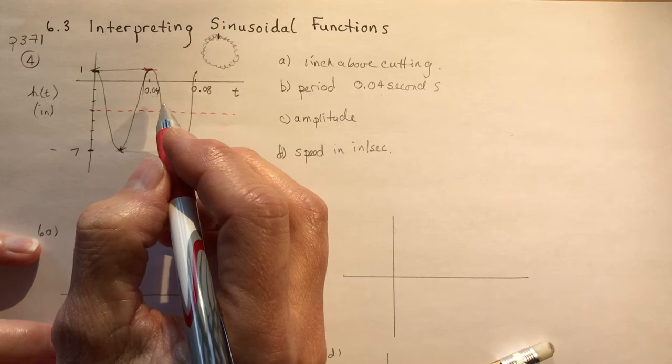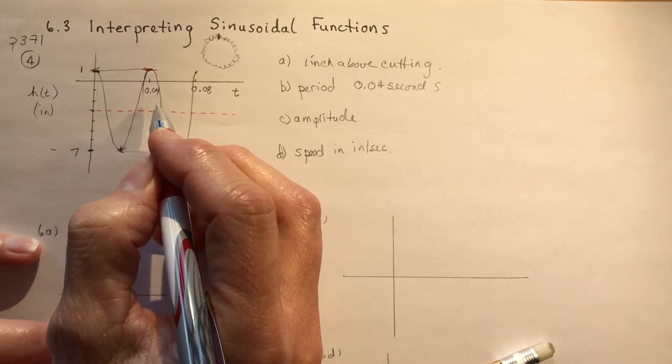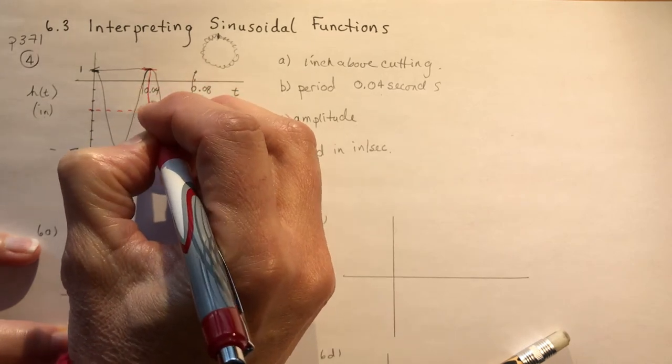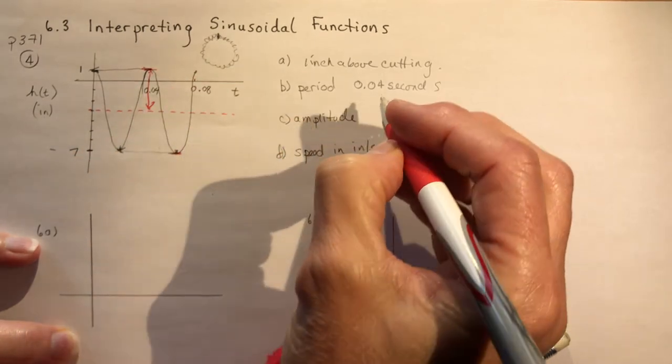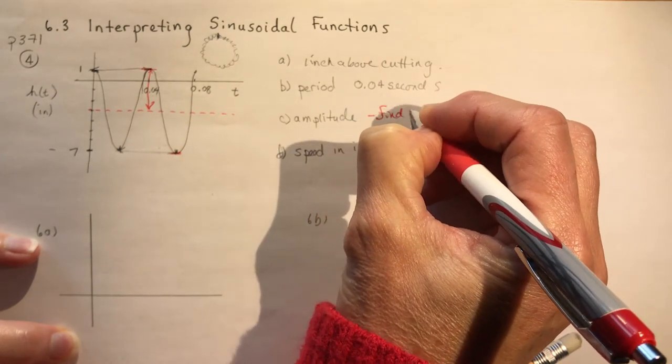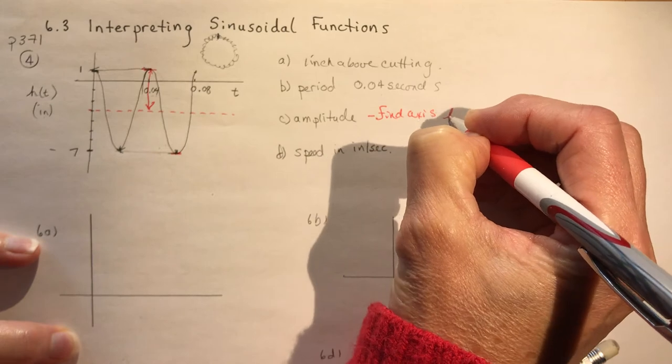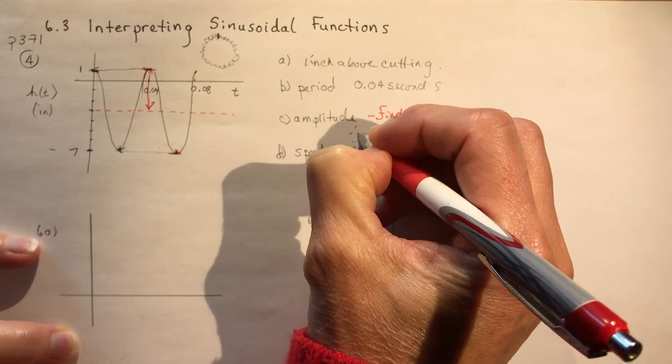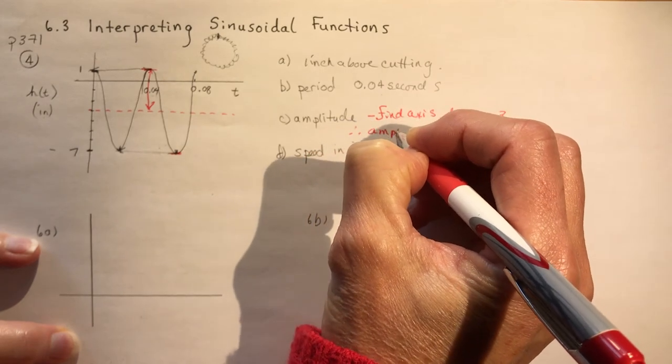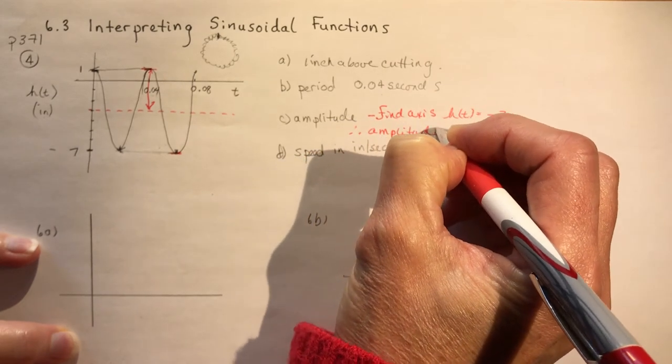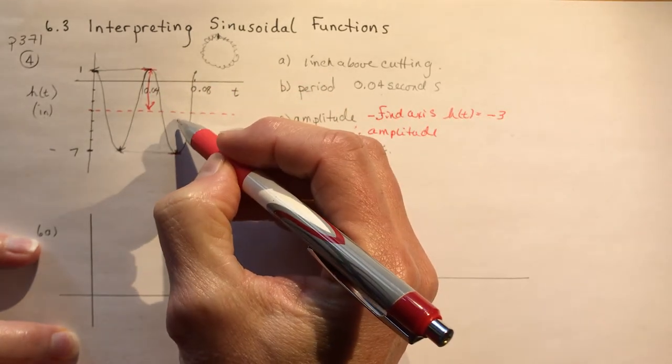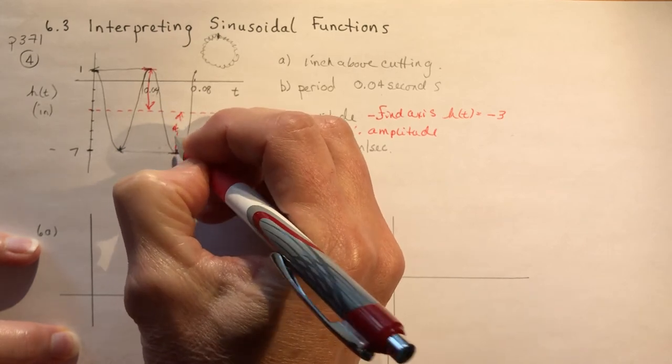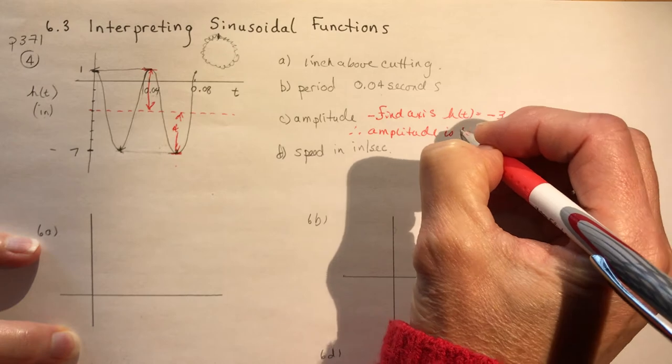So it means that the amplitude is from here up. So how far is it from here to here? So again, I had to find the axis first. And that would be when the height is equal to minus 3. So the amplitude is the distance from that axis to the top or from the axis down. So minus 3 to minus 7 is 4 units. This is 4 from here to here. And it's 4 from here to here. So 4.